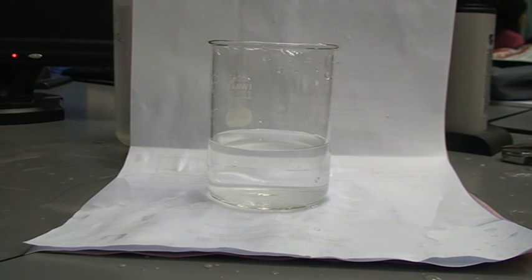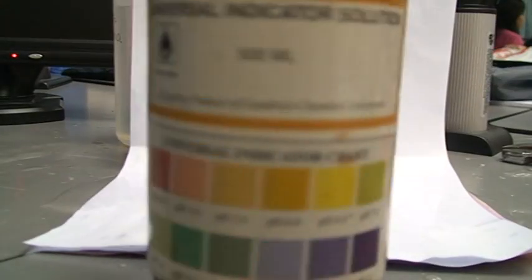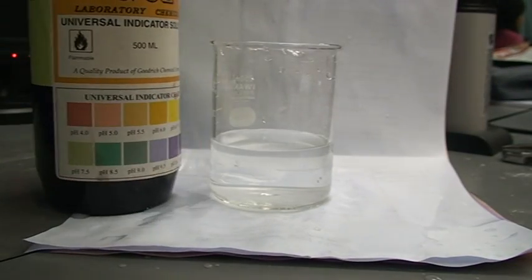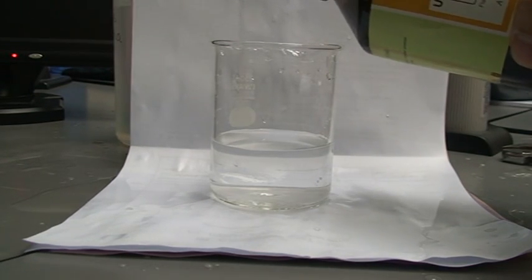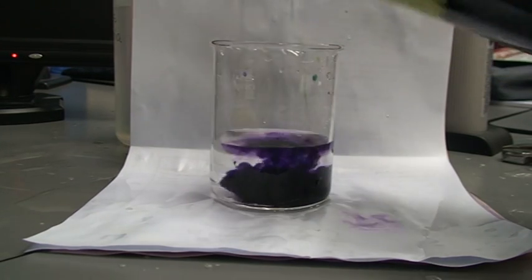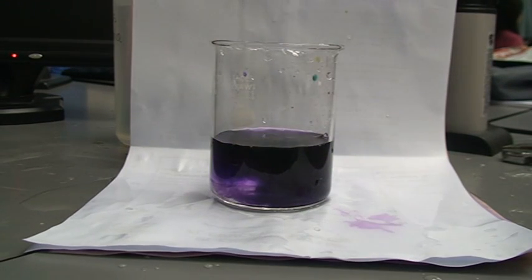And if it is saturated lime water, if we put a universal indicator in. As usual, we're going to pour. We've got too much. We're going to pour. Can you see that it turns purple? It is quite alkaline.